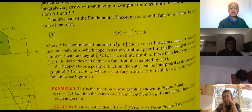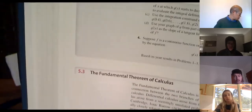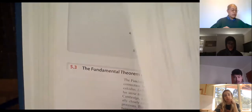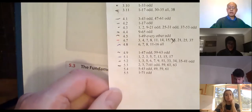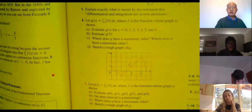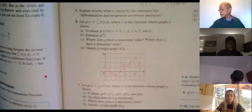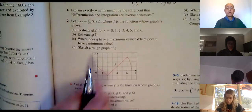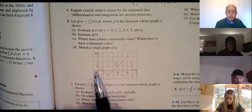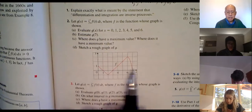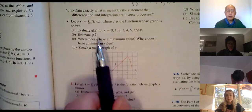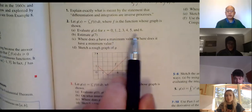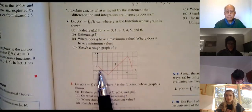g of x is the integral from a to x of f of t dt. In problems two and three from 5.3, we're given a picture. For number two, g of x is the integral from zero to x — starting at zero going to a variable quantity x, so you get a different value for the integral. Evaluate g of x for x equals 0, 1, 2, 3, 4, 5, 6, and estimate g of 7. If I plug in zero, I'm talking about the integral from zero to zero, which is zero.